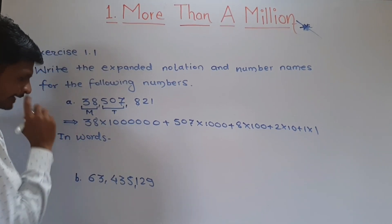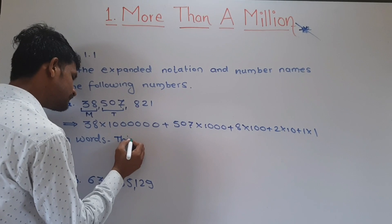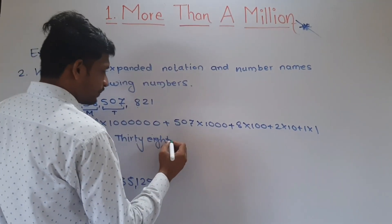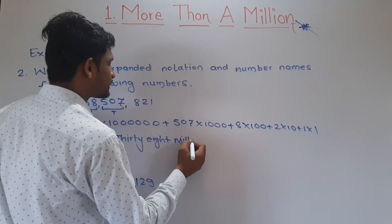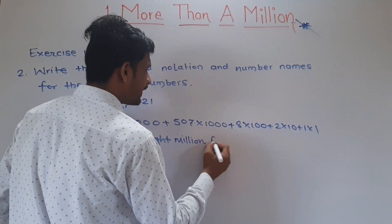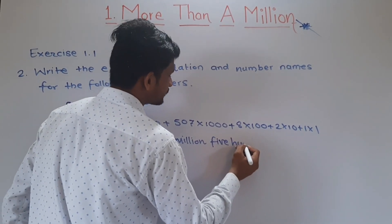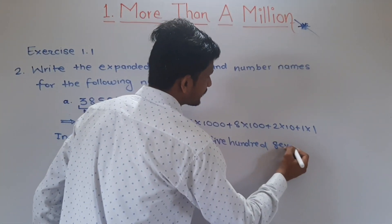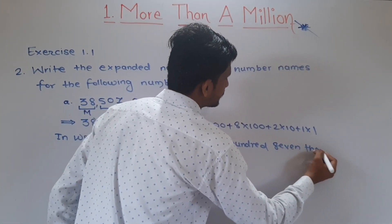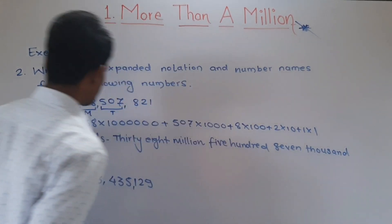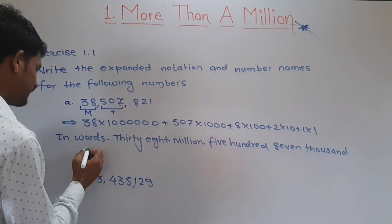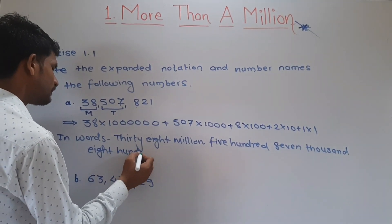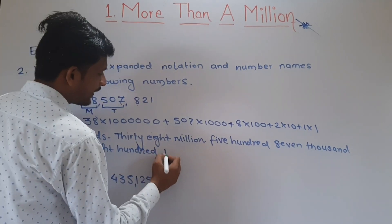In words, question two part A is: thirty-eight million, five hundred seven thousand, eight hundred twenty-one.